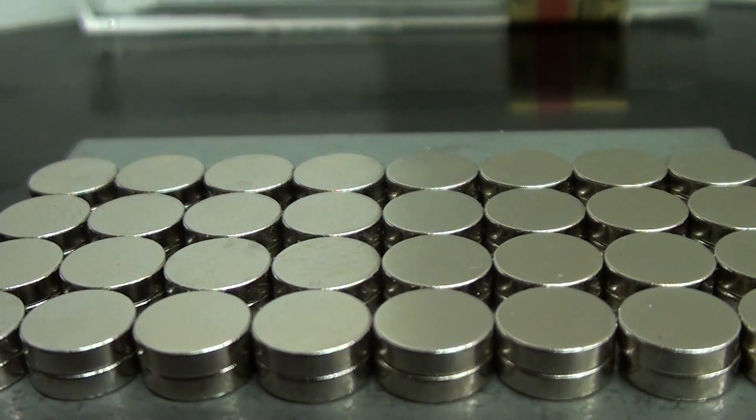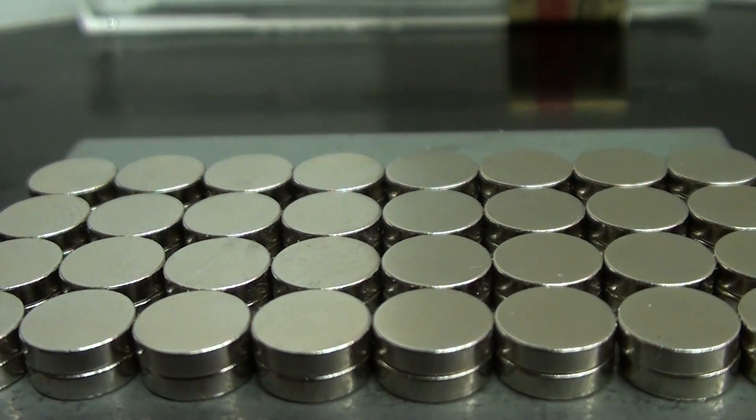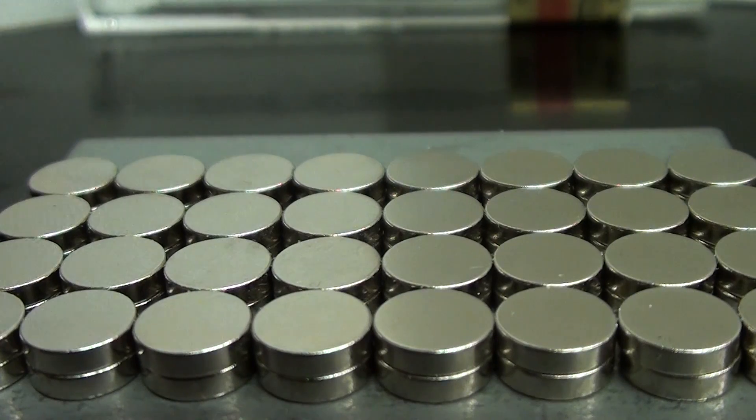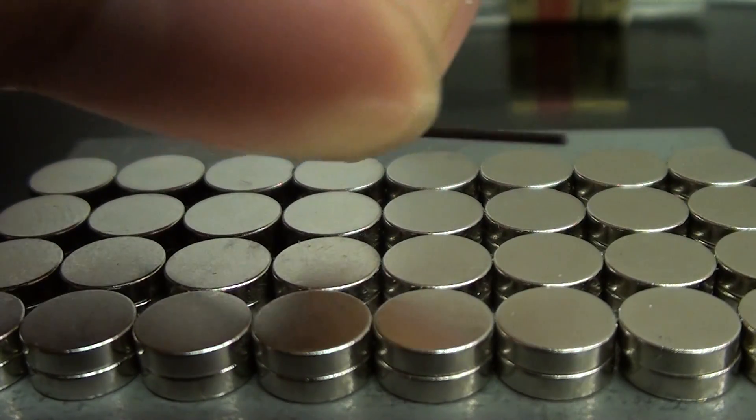Now let's get started. First you'll need to arrange an array of small but strong neodymium magnets in a checkerboard fashion with alternating north and south faces. I'm using round magnets but square magnets are also fine. Once it's laid out just place the pencil lead on top.